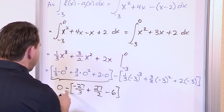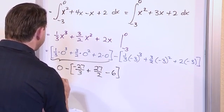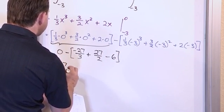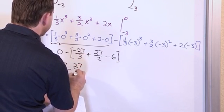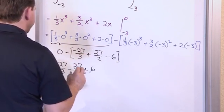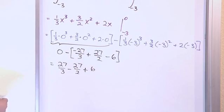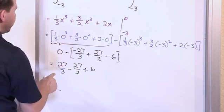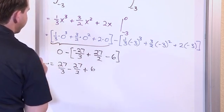So at the end of the day, what I have when I distribute this negative in, I'll have 27 over 3 minus 27 over 2 plus 6. So I have this guy. Now this is all correct, but I see right away that 27 over 3 can be...